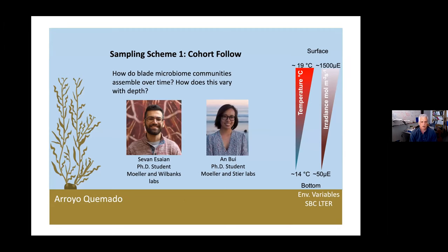Students out of Holly Miller's, Lizzie's, and Adrian's groups wanted to go further in studying cohort development — the colonization of blades and how community structure assembly may shift over time on the blade and over environmental variables like temperature and light over depth. The questions were: how do blade microbiome communities assemble over time, and how does that vary with depth given changes in irradiance and potential nutrient structure?